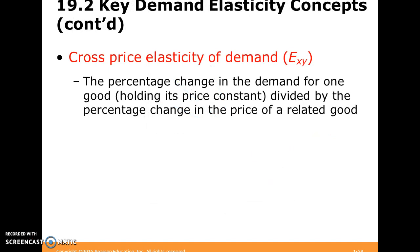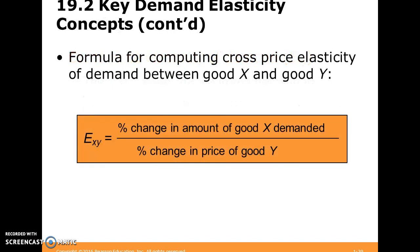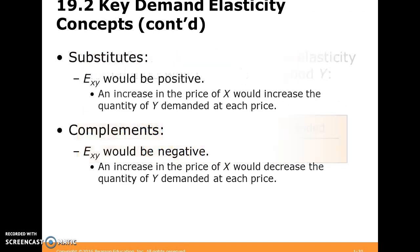There's another good concept to think about: cross price elasticity, which is the percentage change in the demand for one good — holding its own price constant — divided by the percentage change in the price of another related good. We have a formula for that. We can classify this in two different ways. If cross price elasticity is positive, then the two goods are substitutes, and it has an intuitively pleasing explanation: an increase in the price of X would increase the quantity of Y demanded at its price.